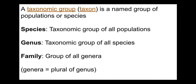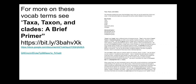A taxonomic group is a somewhat confusing term in biology, but it refers to some named group of populations or species, or potentially even finer-grained than populations. Species is a taxonomic group of all populations within the species; genus is a group of all species within it; family is a group of all genera, and so forth. These terms can be confusing, so I have a short write-up online called 'Taxa, Taxon, and Clades' — a brief primer you can follow the link to.